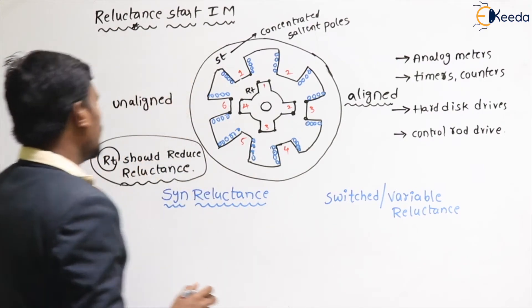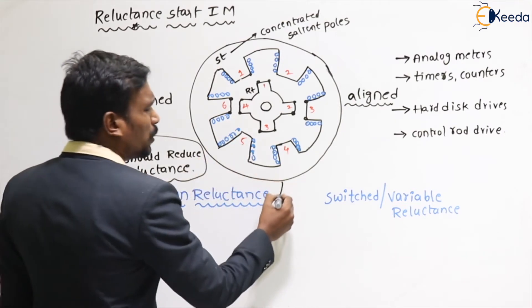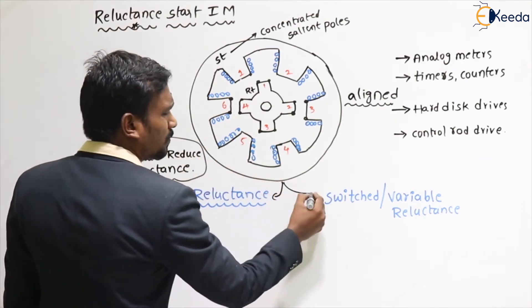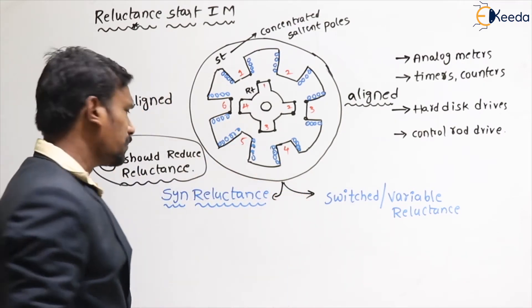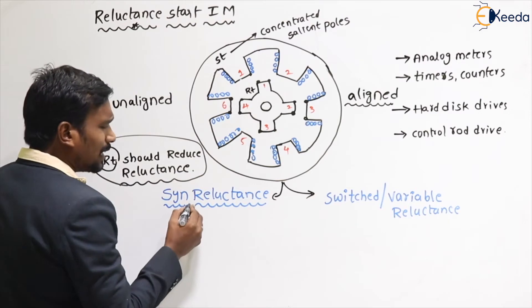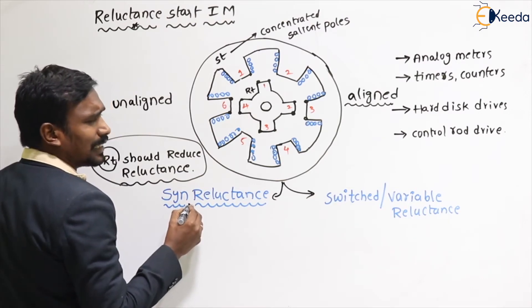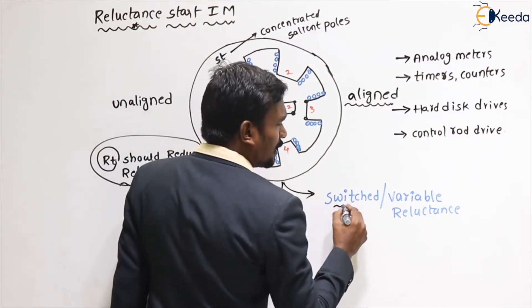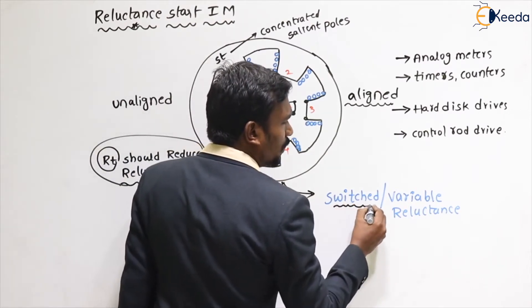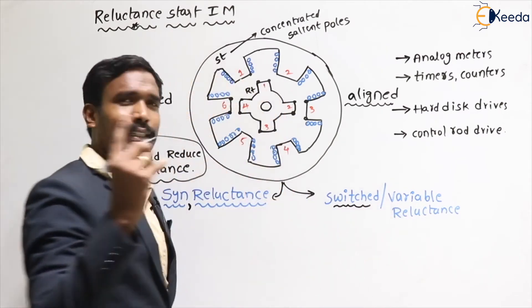Generally in this machine we have two types: one is the synchronous reluctance motor, and the other is the switched or variable reluctance motor.